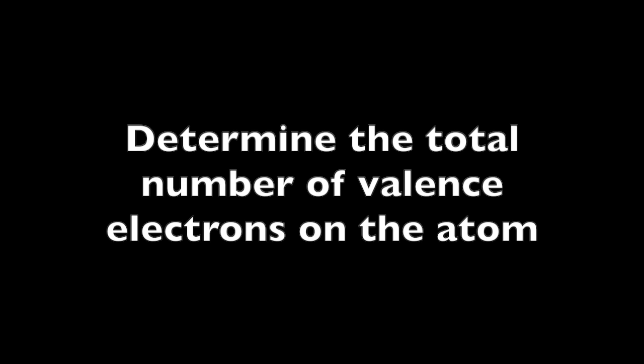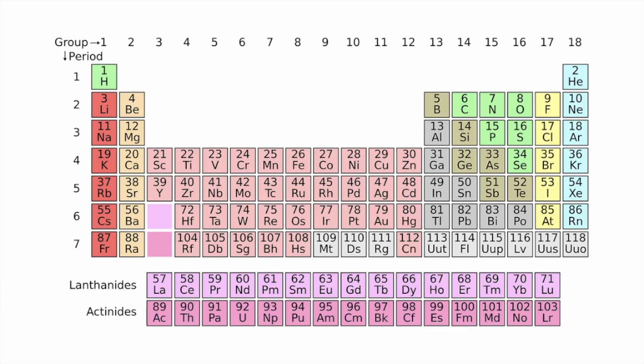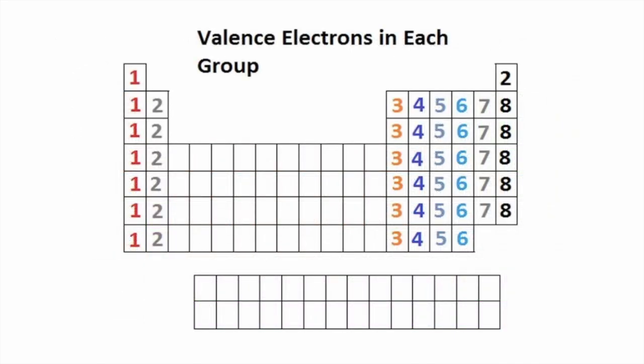Use the periodic table to help you, and this is going to be the number of dots you use. Then write down the symbol for the element. Arrange the dots around the element. There's no right order and there are many ways to do this. Some people like to make sure you put dots on opposite sides of the symbol as you place them, and so each of the four sides should have an electron on it before you begin doubling up. But as I said, there's a lot of variation depending on the atom.